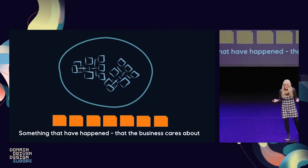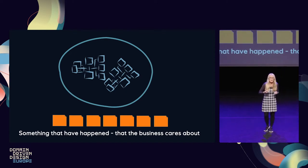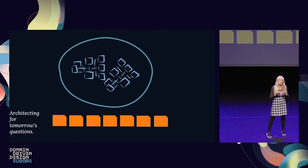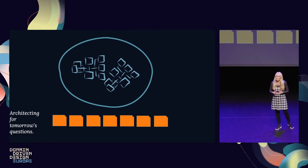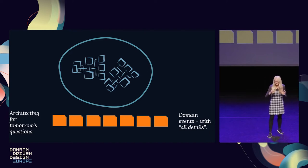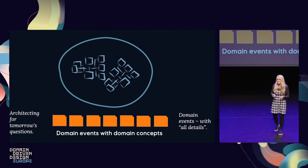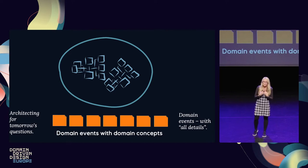And then you have all the domain events — I say domain events, not just events, because my DDD heart is with me when we do event sourcing. A domain event is something that has happened that the business cares about. I have a goal when architecting the solution: I want to architect for tomorrow's questions. That is important in a data-driven organization — someone will and should ask a new question tomorrow. That means we go for domain events with all the details, so we can actually answer those future questions. We have chosen to use domain concepts in our domain events. My DDD heart says domain events are part of your domain model — you have to use domain concepts.